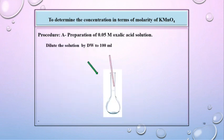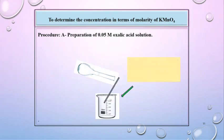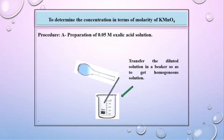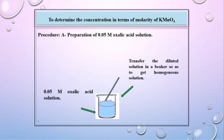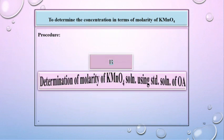Now transfer this solution in a standard flask and make up the volume up to 100 ml. Thereafter, transfer the diluted solution in a beaker so as to get homogenous solution. So this is 0.05 molar oxalic acid solution.